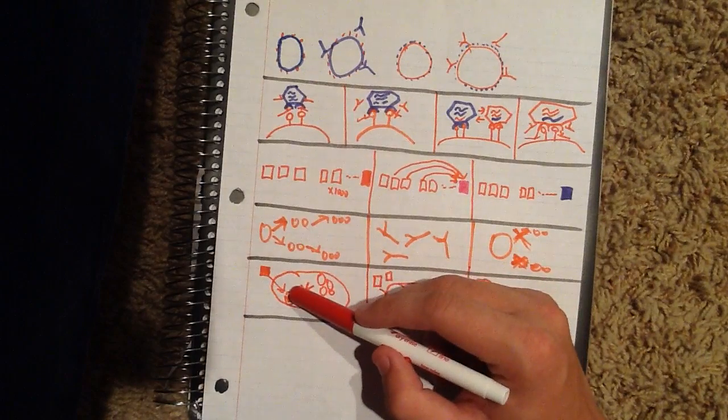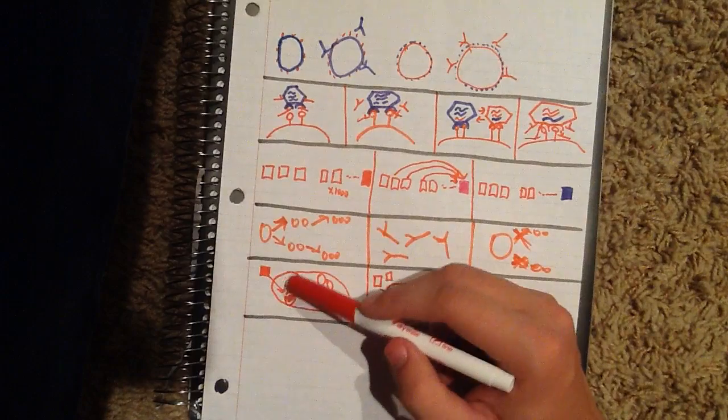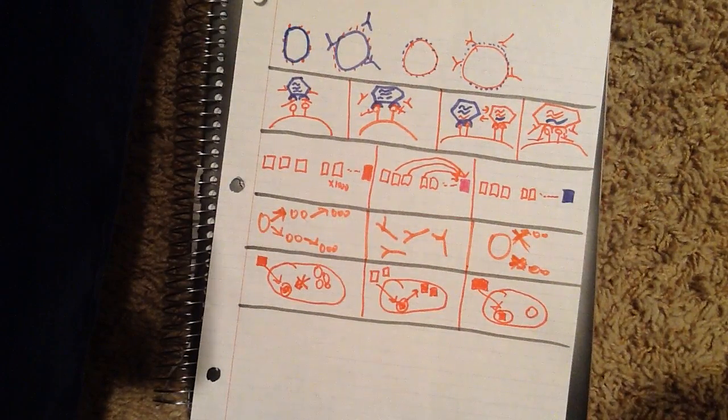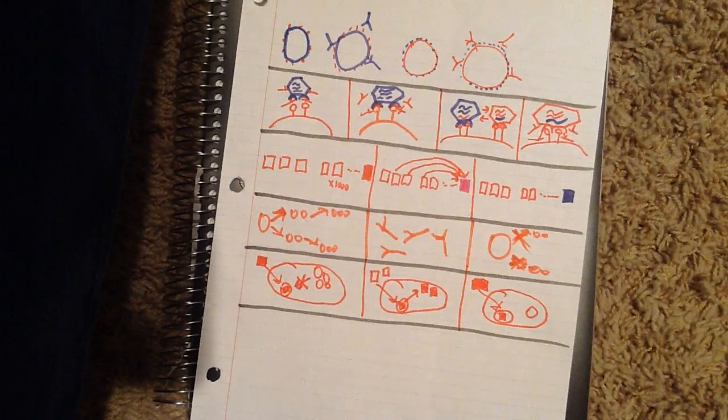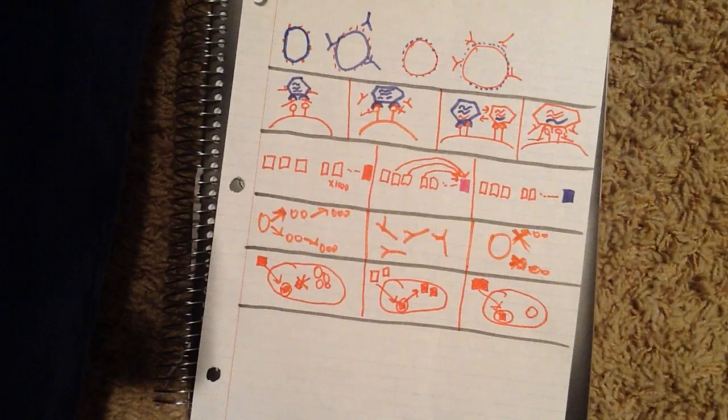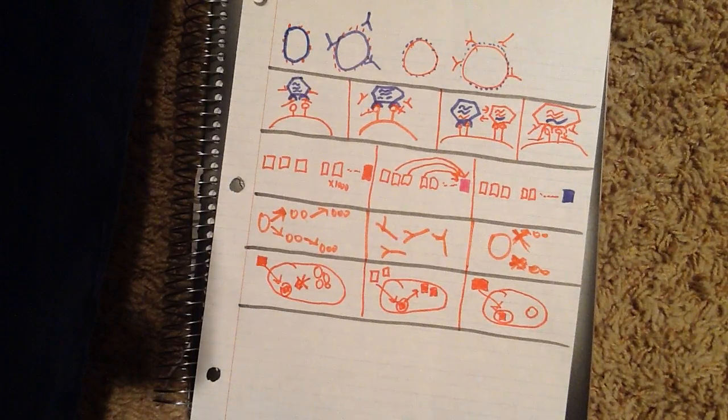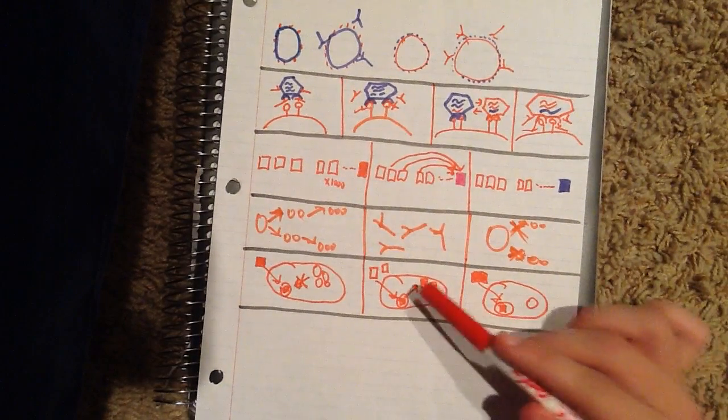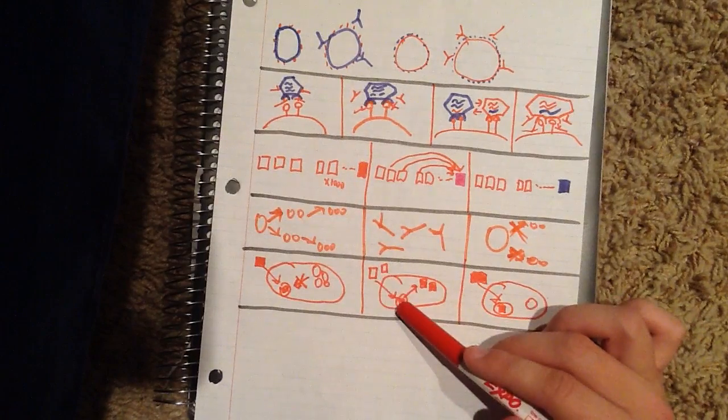The second example that this occurs is by Listeria monocytogenes. This particular bacterium will survive by avoiding contents of the lysosome through escape into the cell's cytoplasm. It's going to invade the cell and escape into the cytoplasm.